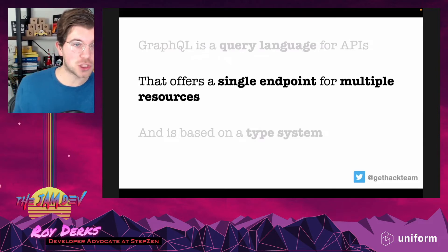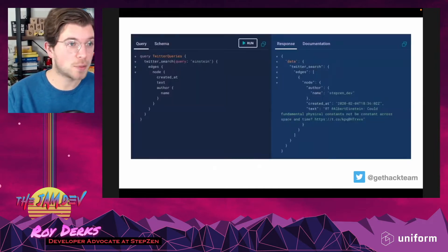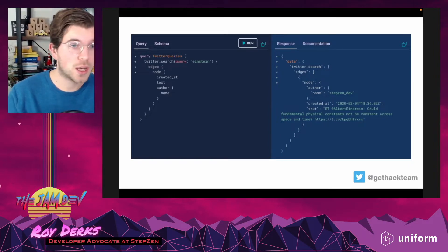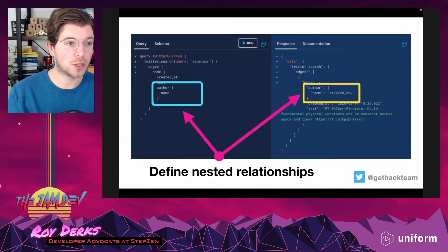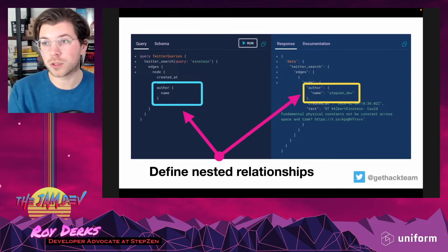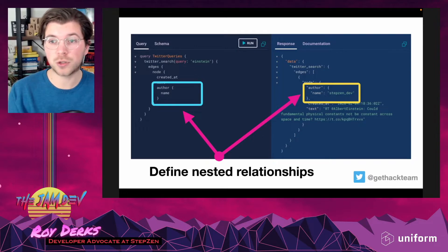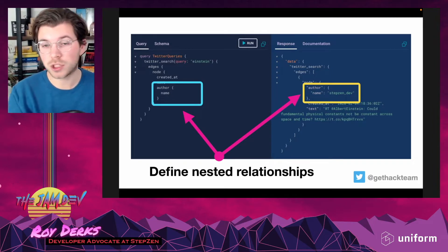GraphQL also offers a single endpoint for multiple resources. Looking at a Twitter example, you can see nested relationships where we request author information about a specific tweet and it returns nested data — potentially from multiple resources or microservices. The nice thing about GraphQL is that you can use one query to get data from multiple services, and nested relationships are perfect for this kind of architecture.